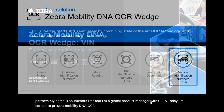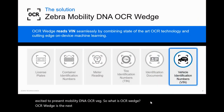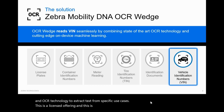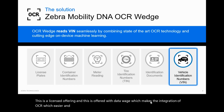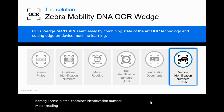So what is OCR Wedge? OCR Wedge is a next-generation data capture solution which uses on-device machine learning and OCR technology to extract text from specific use cases. This is a licensed offering provided by DataWedge, which makes integration easier and without a lot of coding. There are six different configurations on offer: license plates, container identification number, meter reading, tire identification number, identification documents, and vehicle identification number.